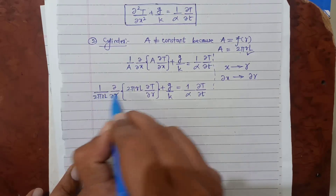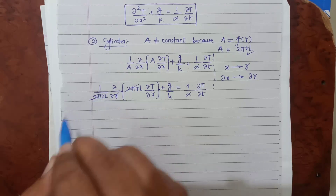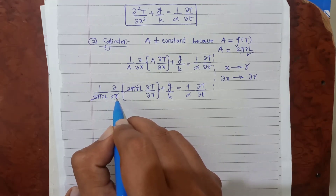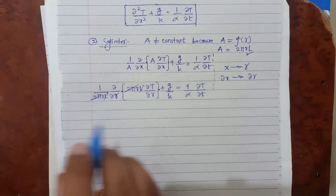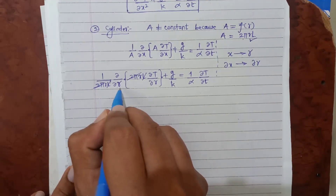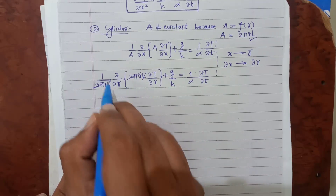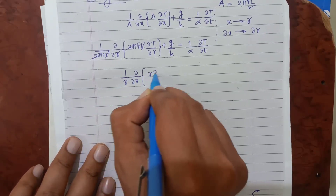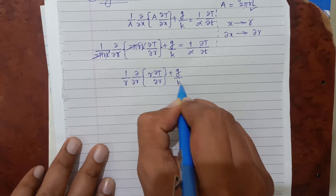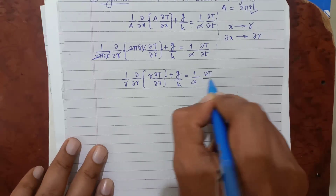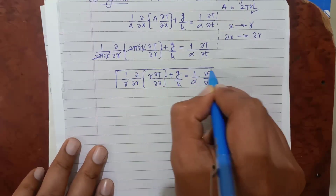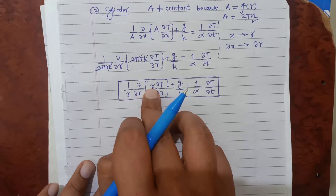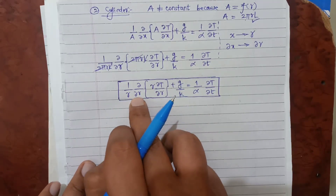After absorbing the constants 2, π, and L, only r remains untouched. Since the differentiation is with respect to r itself, the r inside and outside the bracket cannot be cancelled. What we get is: 1/r · ∂/∂r(r · ∂T/∂r) + g/k = 1/α · ∂T/∂t. This is the governing differential equation for one-dimensional heat conduction in a cylinder, where the area term has been replaced by r both inside and outside the bracket and the directional coordinate has changed.